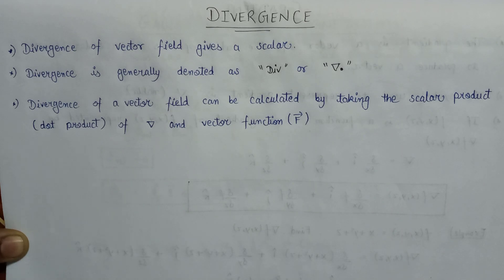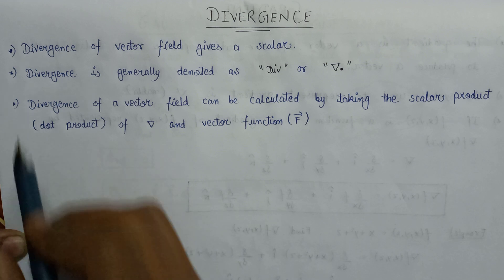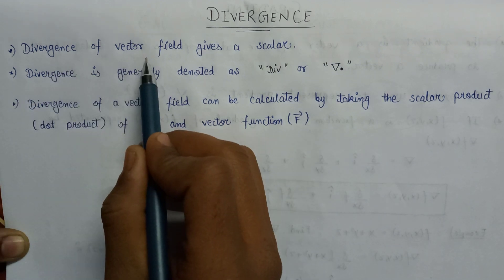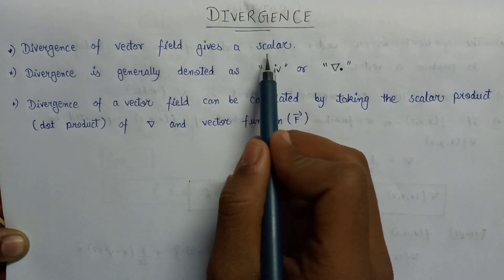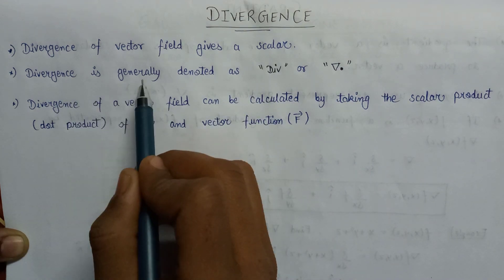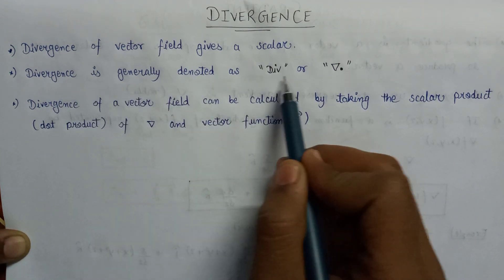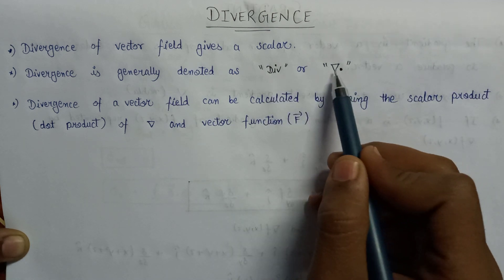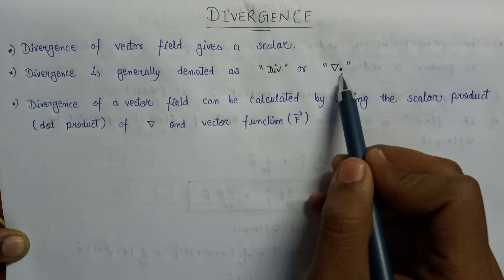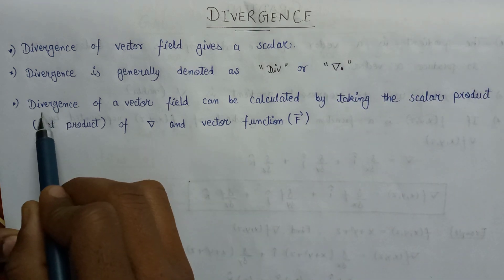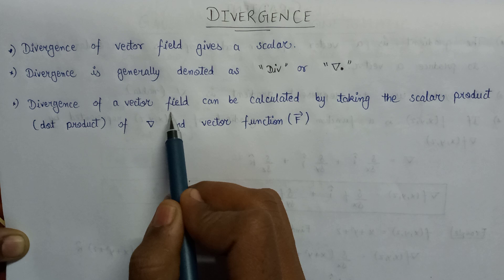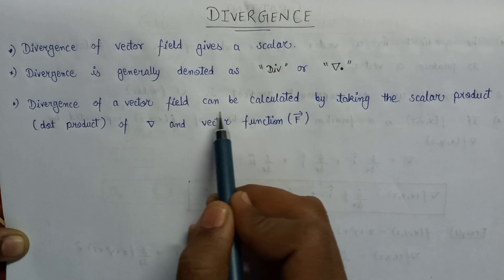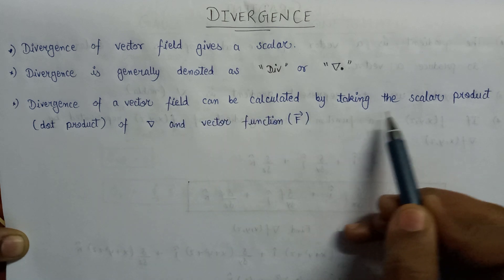Welcome all. In this lecture we are going to discuss divergence. Divergence of a vector field always gives a scalar as a result. Divergence is generally denoted as div or it can also be represented as del along with the dot operator.